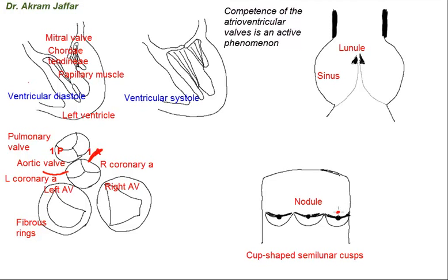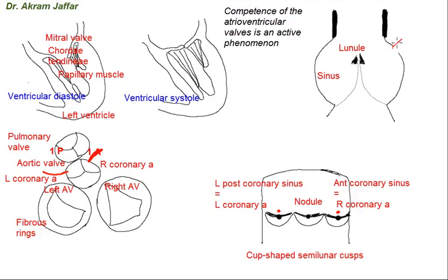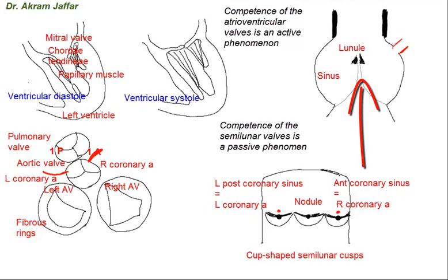Returning to the other drawings, this shows the origin of the coronary arteries from the anterior and left posterior coronary sinuses of the aorta. Competence in the semilunar valves is a passive phenomenon, unlike that in the atrioventricular valves which require contraction of papillary muscles. Here there are no papillary muscles. During ventricular contraction, blood passes through these valves, pushing the cusps away so they project into the artery close to its walls, but they do not stick to the wall because of the blood within the sinus.